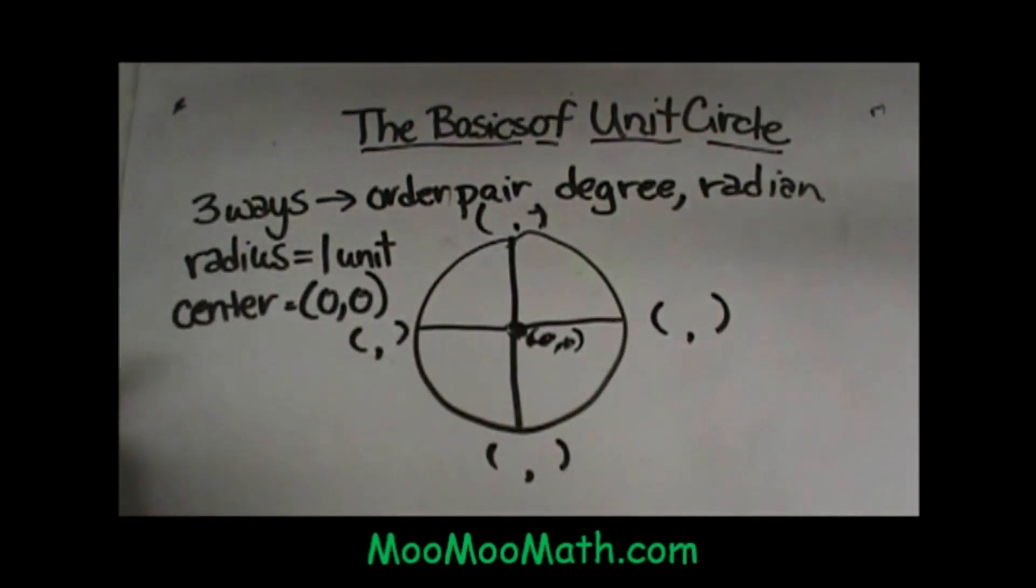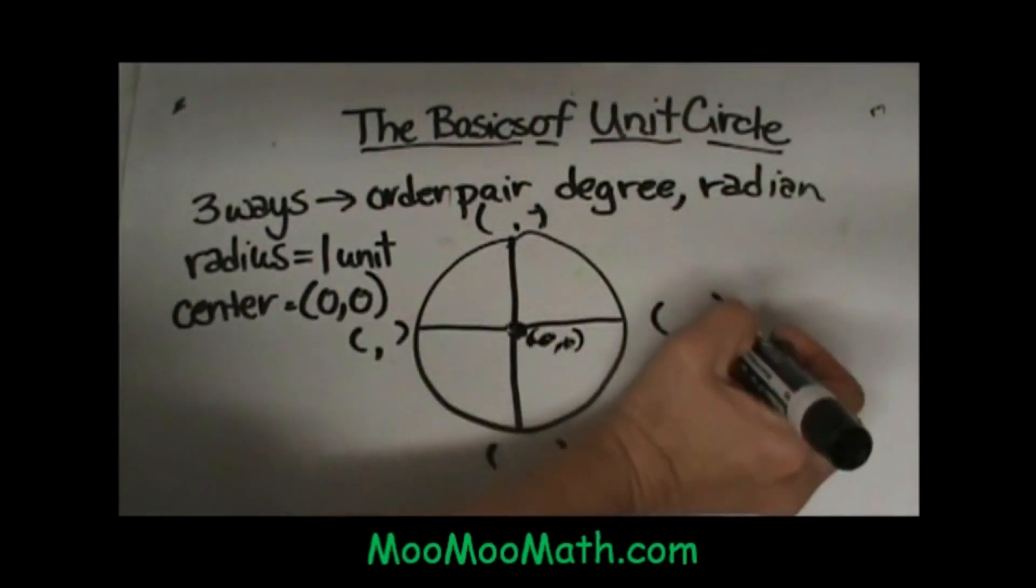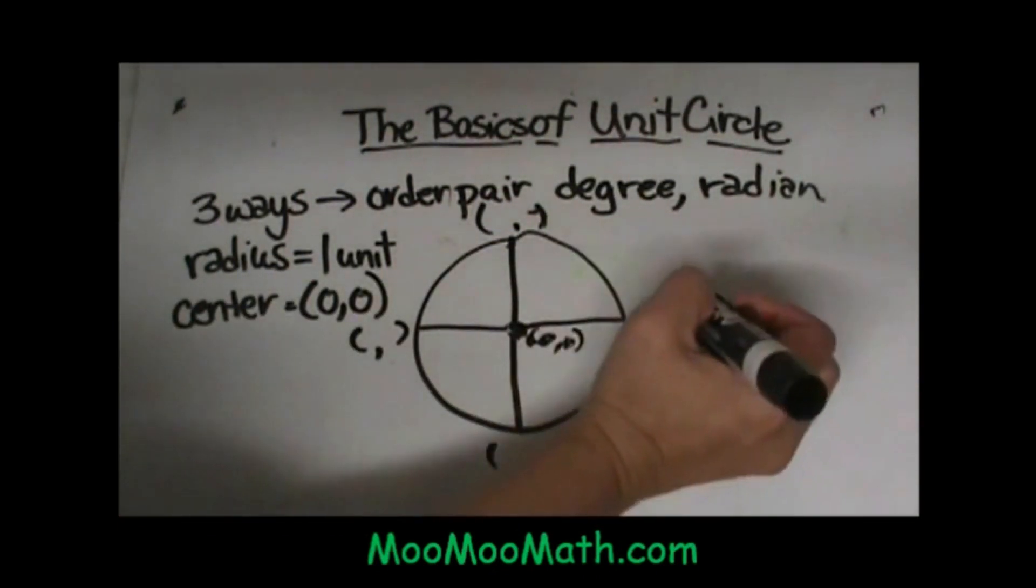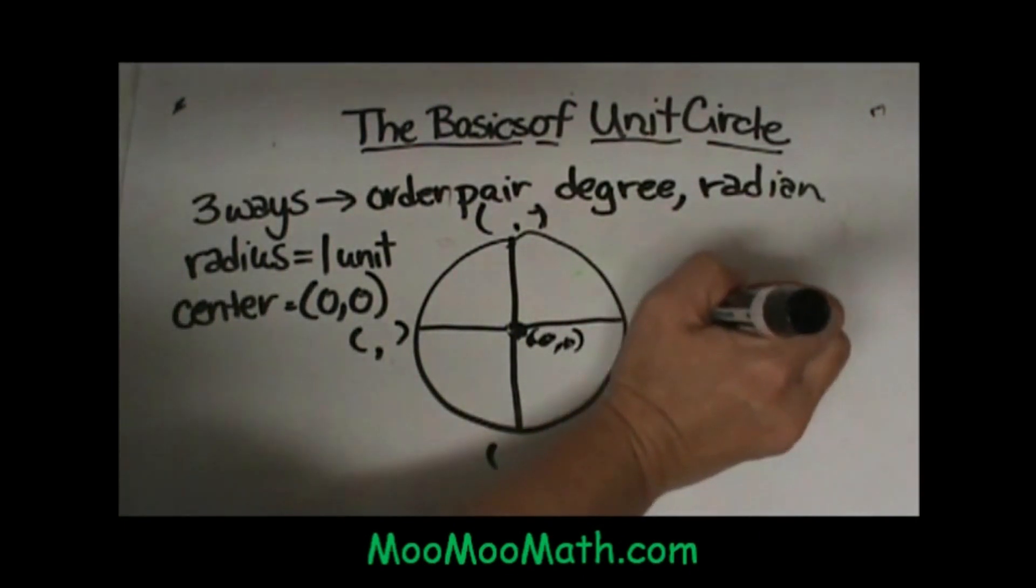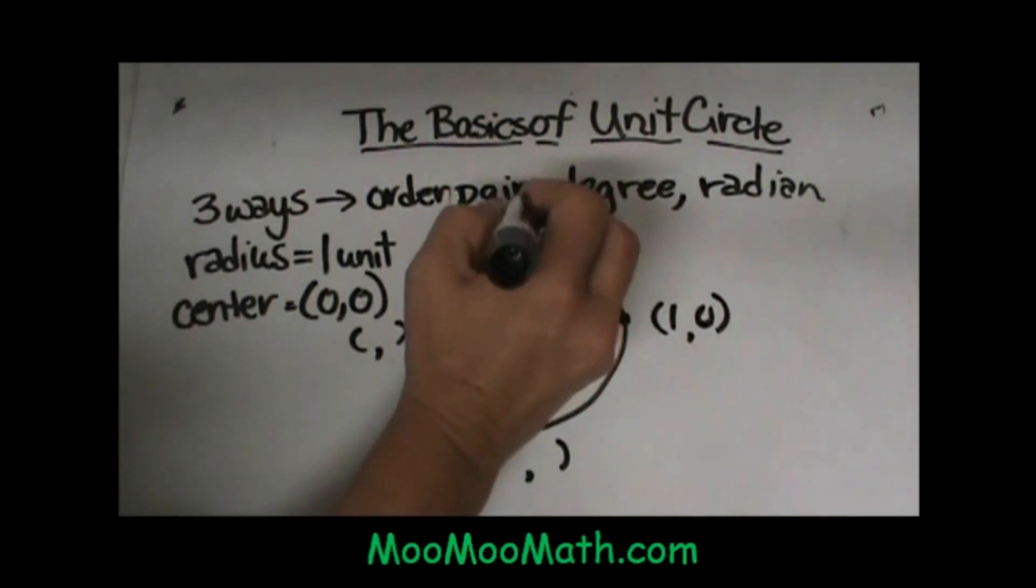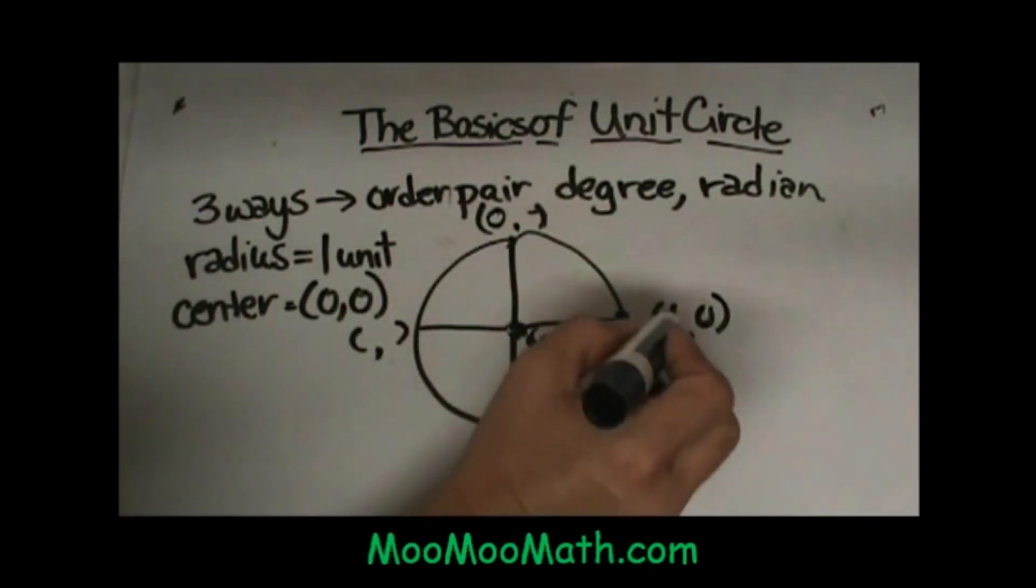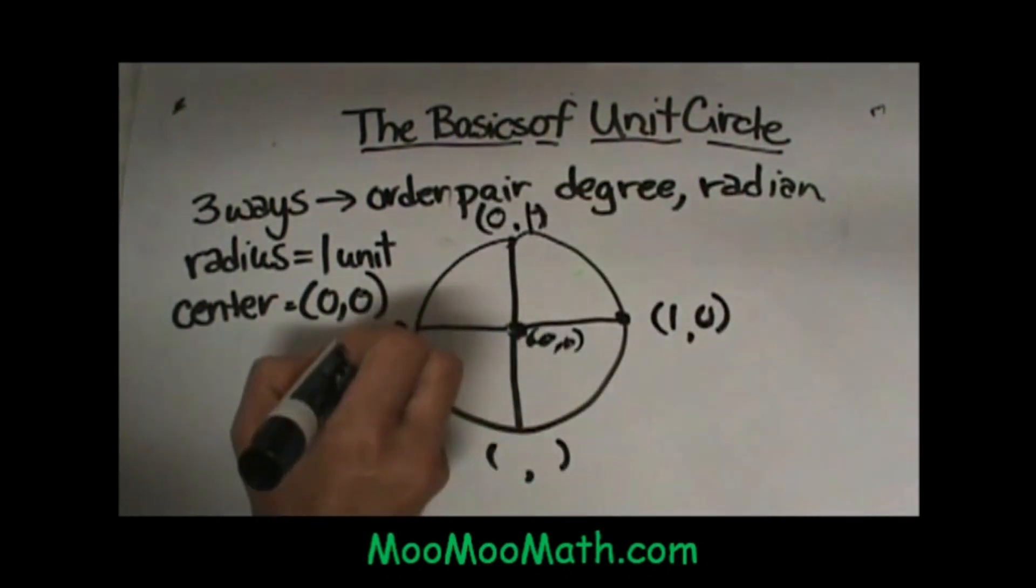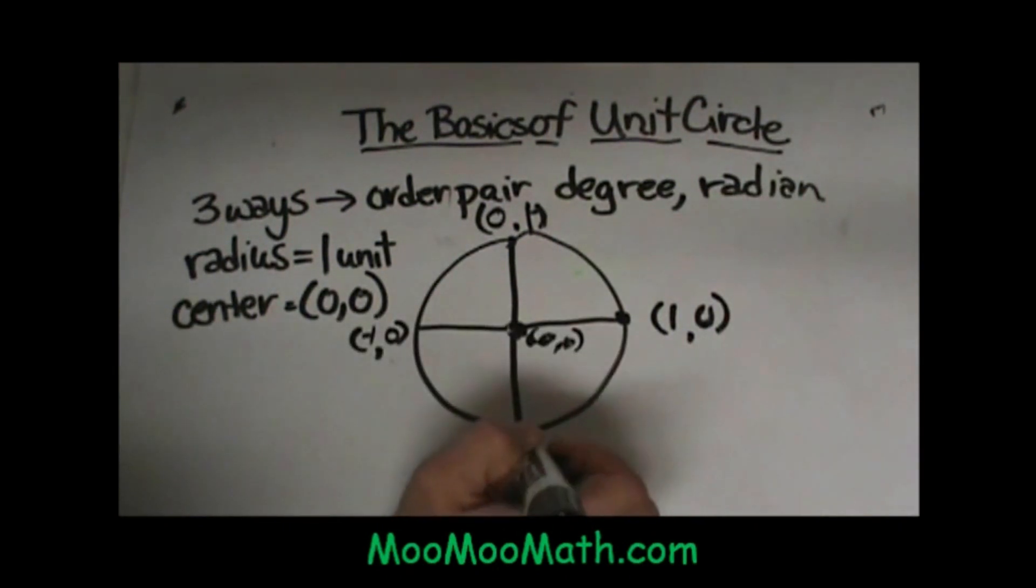these four points, which become our main reference points, have one in the coordinate. This first point is (0,1). The next point is (1,0). The second one is (0,1). This third one on the left is (-1,0). The bottom one is (0,-1).